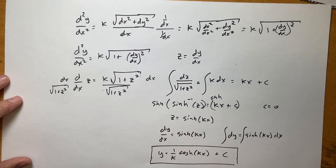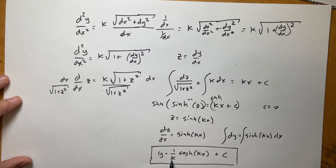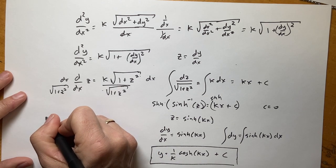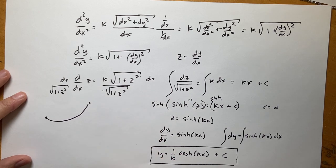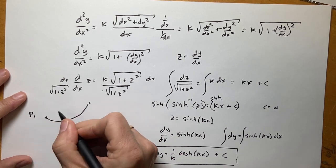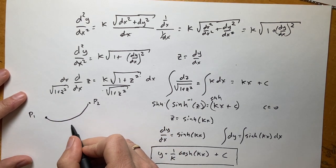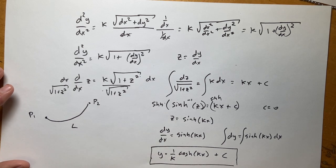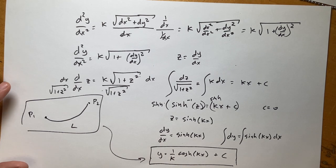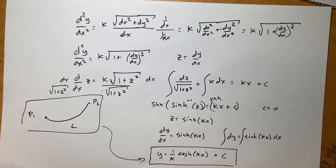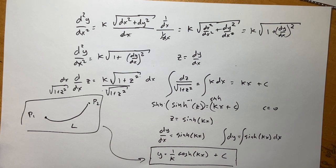What's k and what's c? That depends on your parameters. This shows that the shape of a catenary cable is a hyperbolic cosine function. Solving for k — for example, given the two endpoint locations p1 and p2 and the total cable length l — is still not trivial. But that's how you find the expression for a catenary cable.